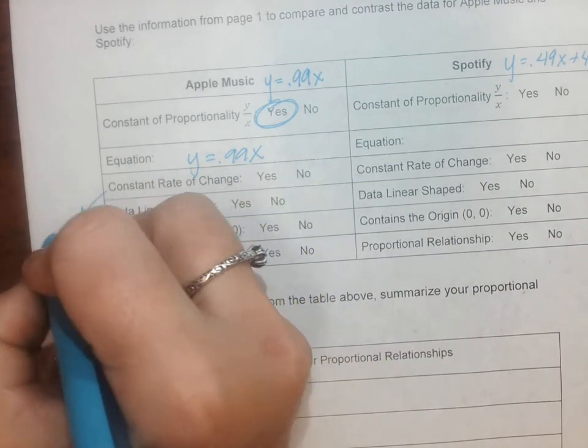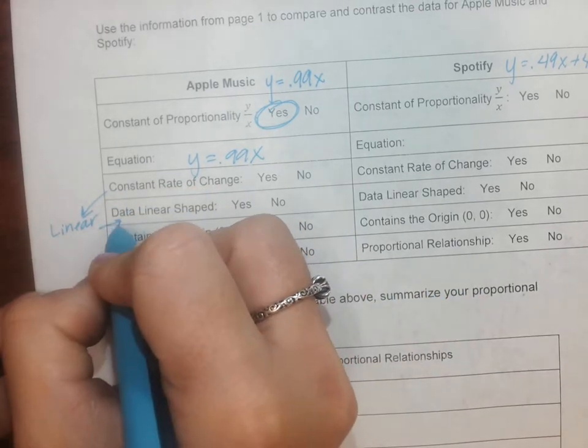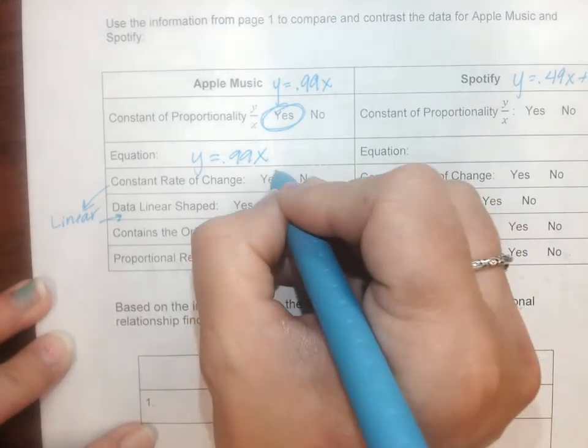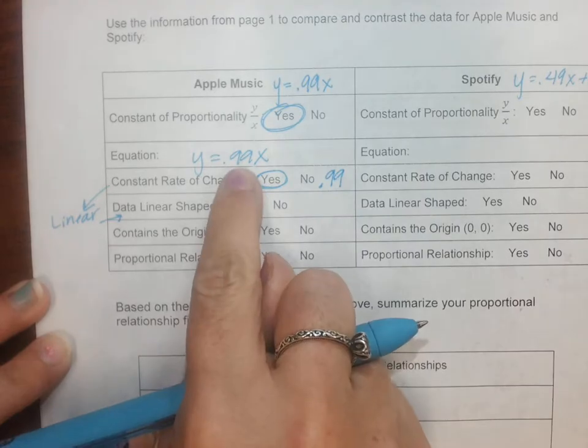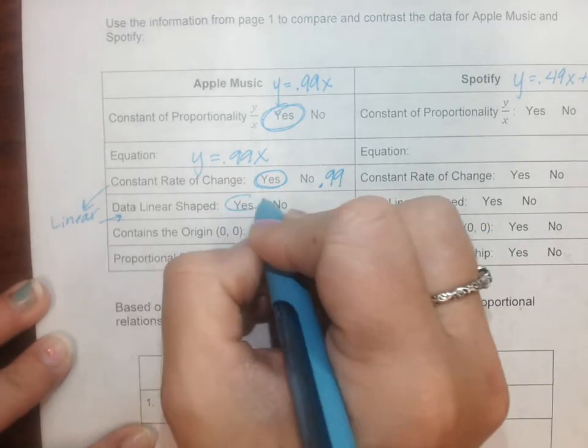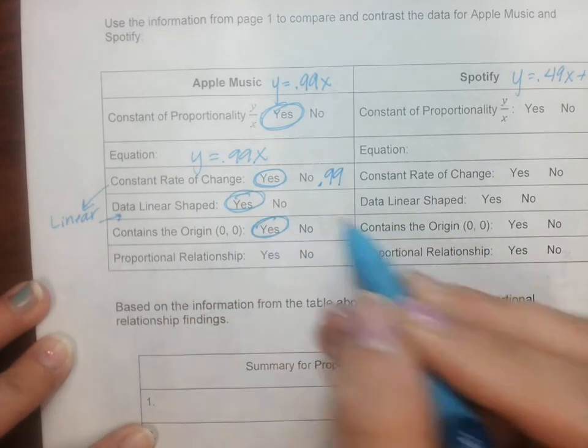The equation, we wrote it up there, let's just copy it. Constant rate of change - this is what makes it linear - that it has a constant rate of change. Yes. What's my constant rate of change? 99 cents. Linear shape? Yes. Contains the origin? Yes, zero zero. Proportional? Yes.